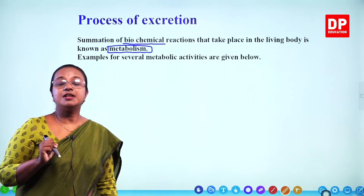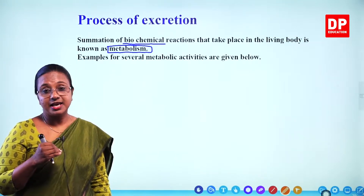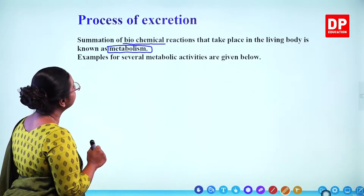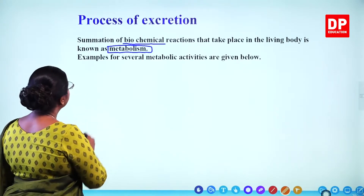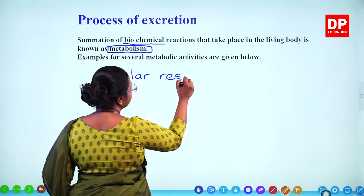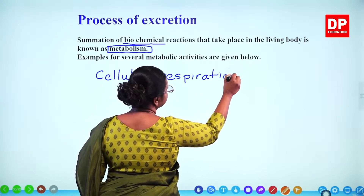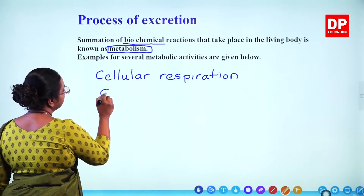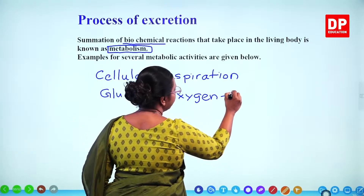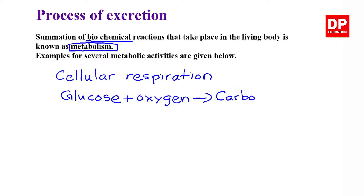There are many different types of metabolism. One example is cellular respiration. During cellular respiration, glucose is oxidized with oxygen — you know this equation very well — and carbon dioxide, water, and energy are produced.